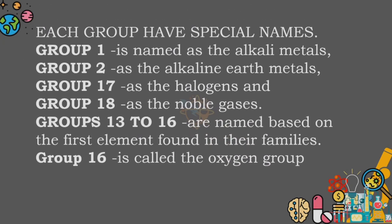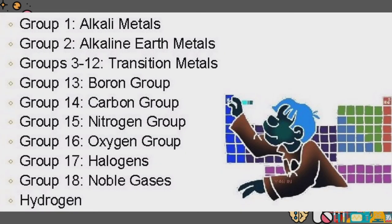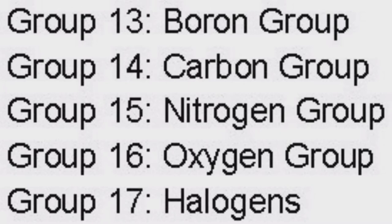And each group has special names. Group 1 is named as the alkali metals. Group 2 as the alkaline earth metals. Group 17 as the halogens. And group 18 as the noble gases. Groups 13 to 16 are named based on the first element found in their families. Thus, group 16 is called the oxygen group.